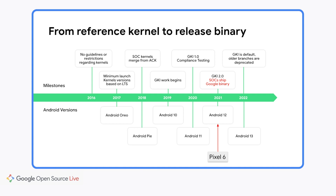In 2022, we can see that the GKI model is now largely adopted in the partner ecosystem and branches predating GKI are getting deprecated. In 2023 and Android 14, you can see us already working on AOSP on improving developer experience, partner integration even more, and our tooling.